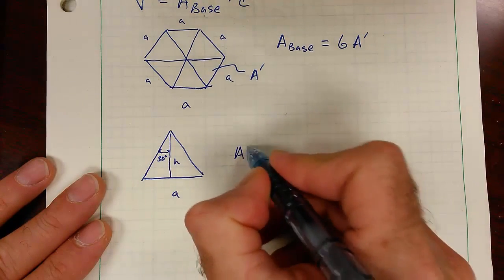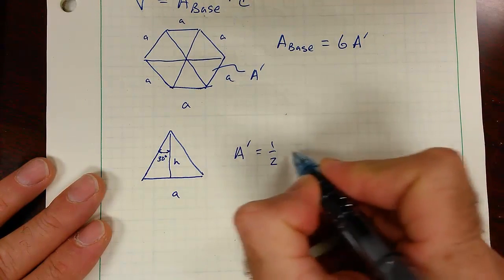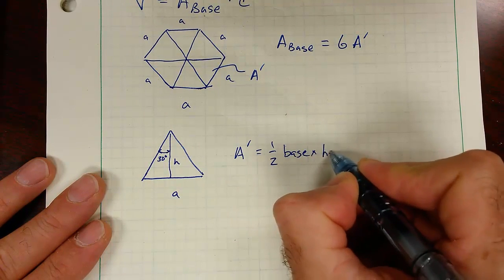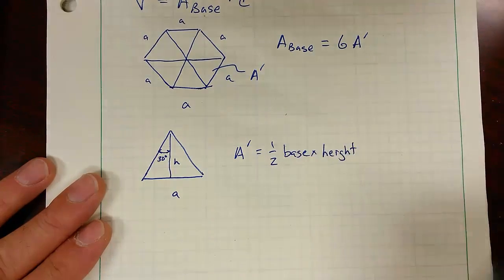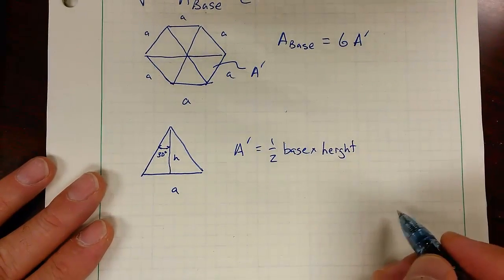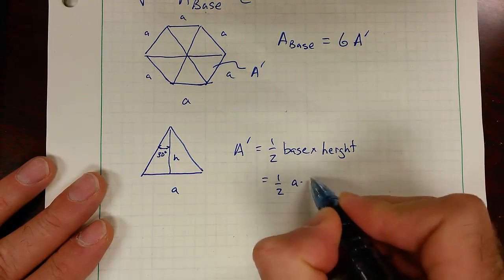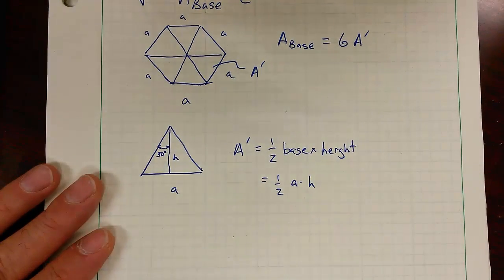So A prime is one-half base times height, which is one-half a times h. What is h?